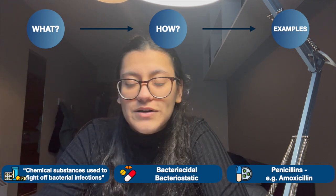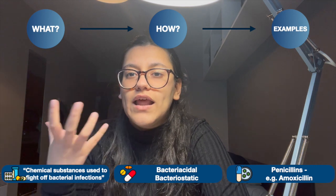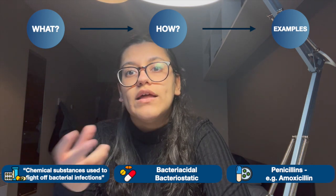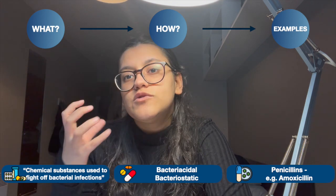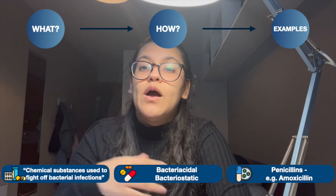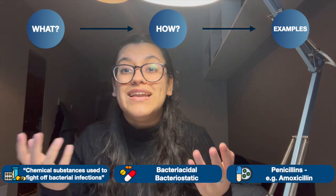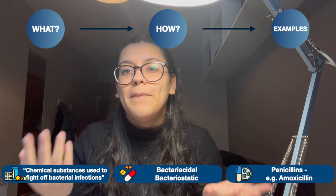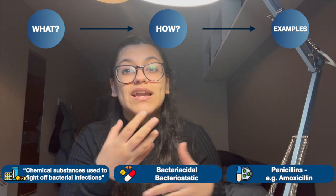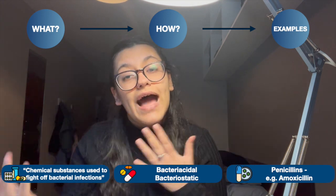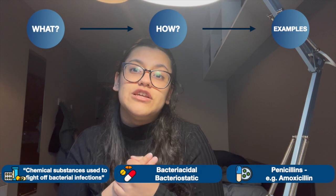When Fleming returned from a two-week vacation, he saw that a mold had developed and that wherever the mold was, the bacteria was no longer there. He found that an active agent in the mold had killed the bacteria — this was penicillin. He named that active agent penicillin, and we began extracting and using it as an antibiotic. We can now create it artificially in labs.